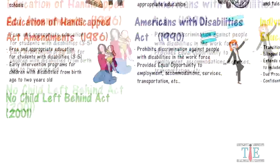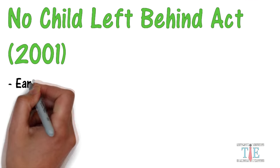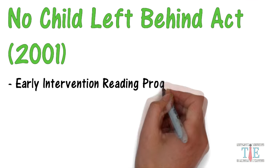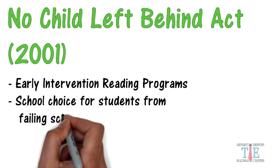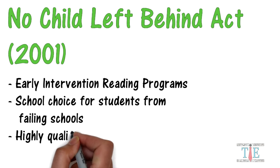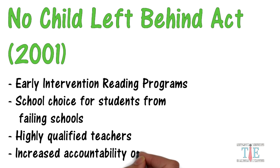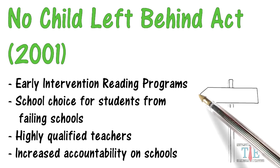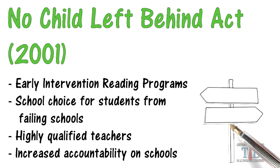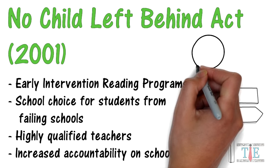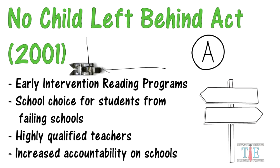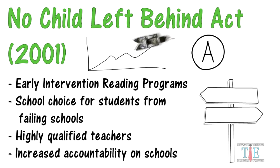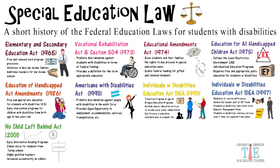Moving on to one of the most renowned laws: the No Child Left Behind Act. Major contributions include early intervention reading programs, school choice for students from failing schools, and increased accountability on schools. School choice stands out — the idea is that students should have opportunities to attend successful schools. Public schools are now required to make the grade, though this law's number one complaint is that it adds unnecessary pressure on schools and teachers. Failing schools must meet minimum benchmarks for student achievement.